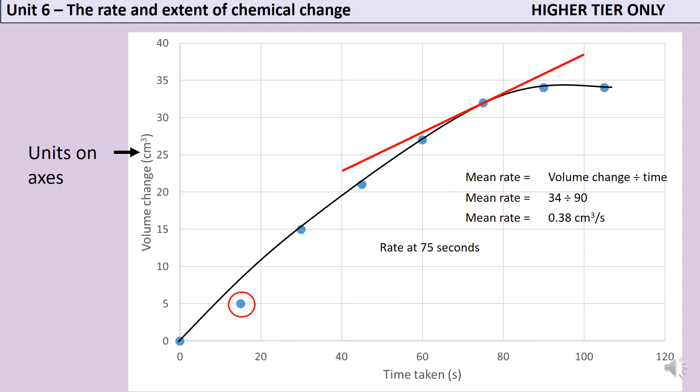Now, obviously in the exam you would have a proper piece of graph paper with all the intermediate lines, so you'd be able to be a little bit more accurate than I'm going to be here. But I'm going to judge that that tangent is showing an increase in volume of 15 centimeters cubed, and that's taking 60 seconds to happen. So the rate at 75 seconds will be 15 divided by 60, which is 0.25 centimeters cubed per second.